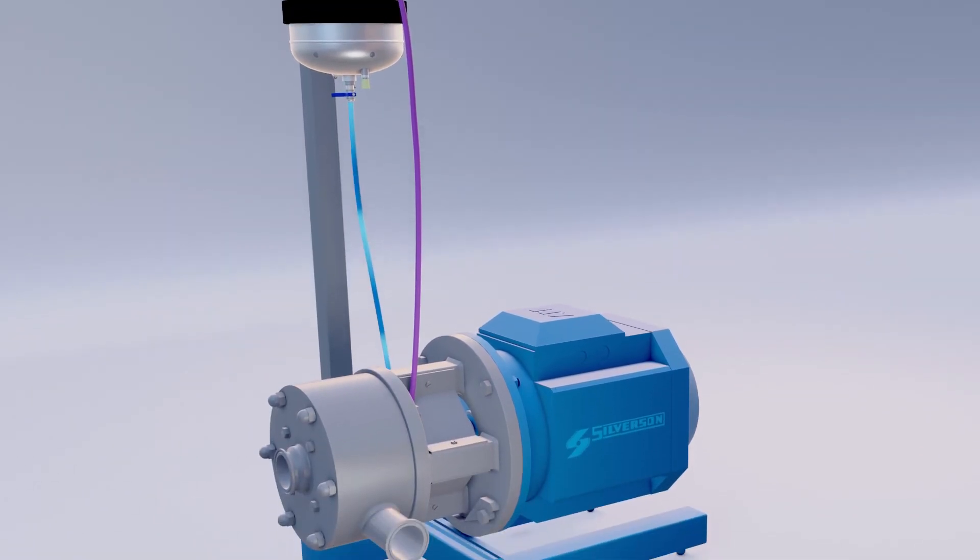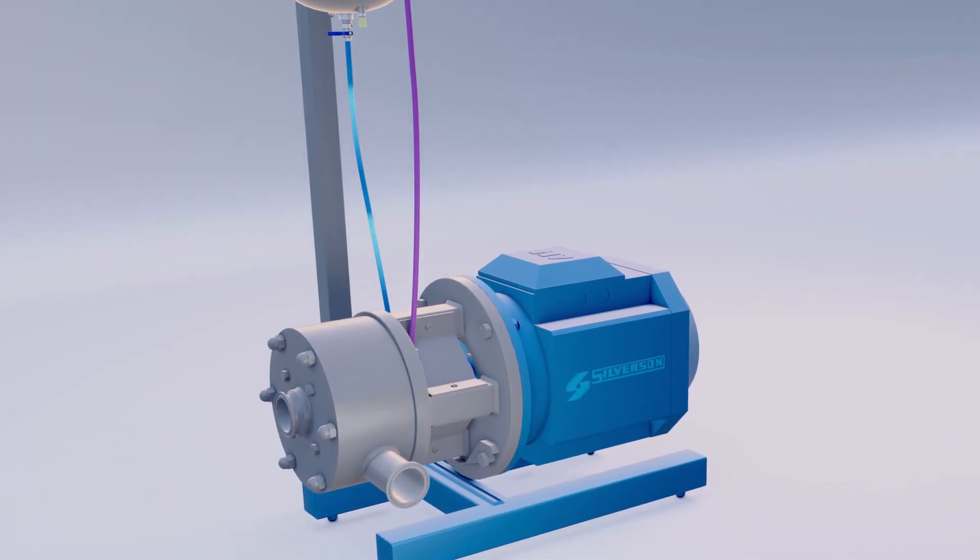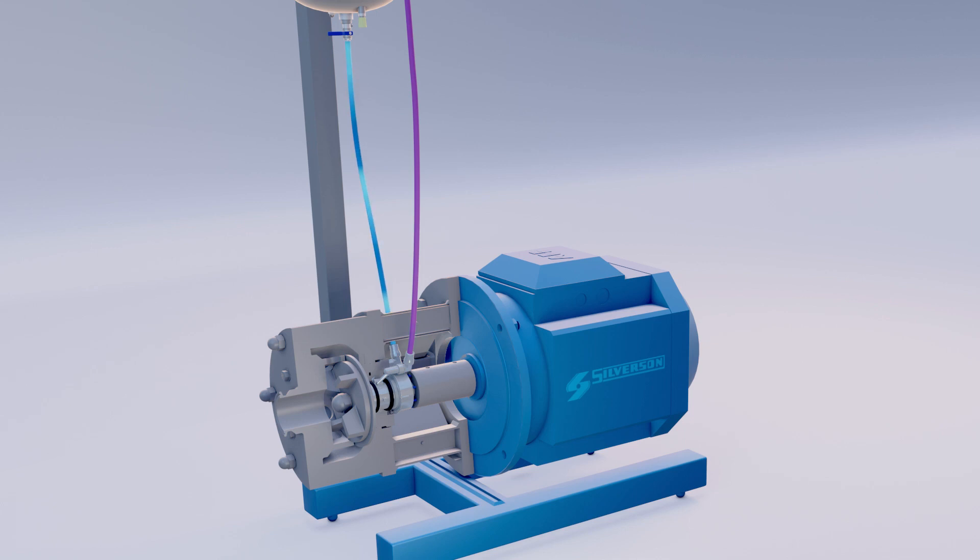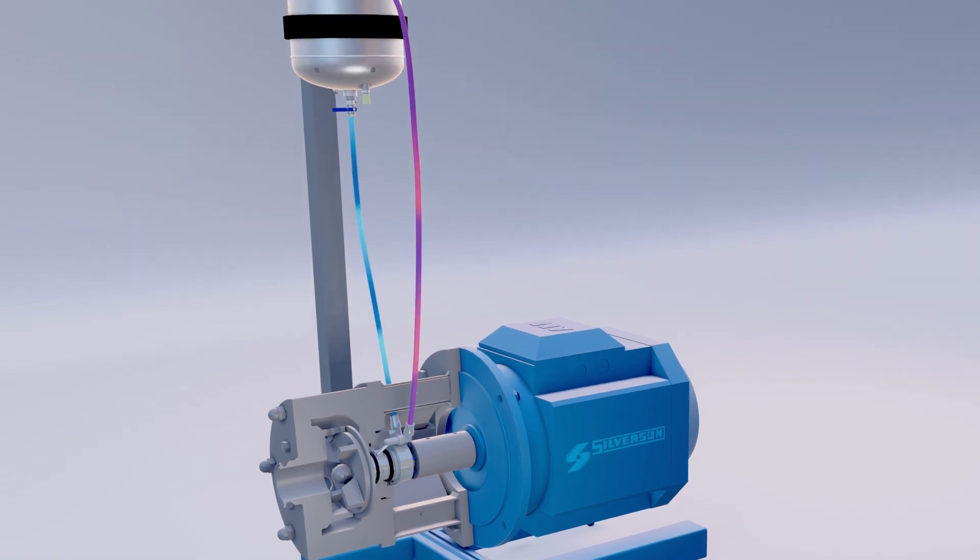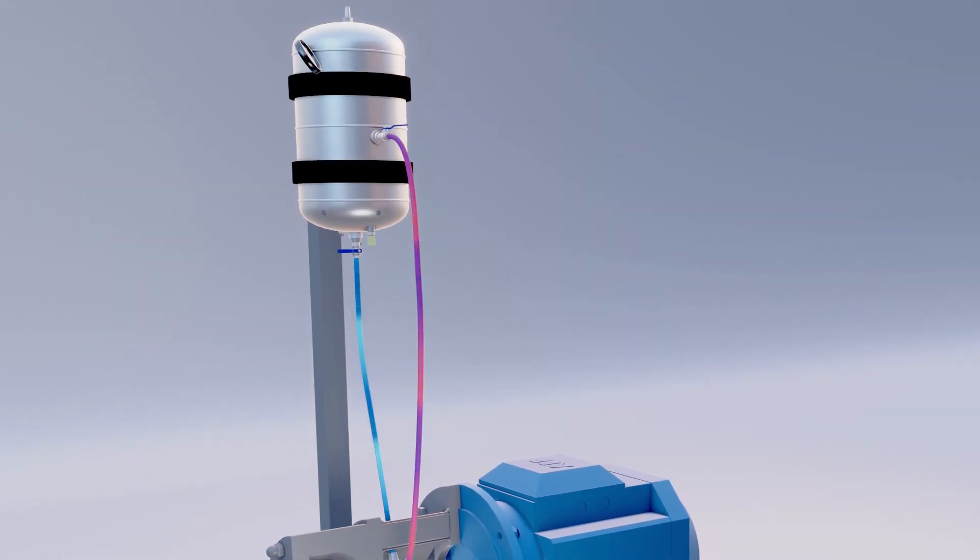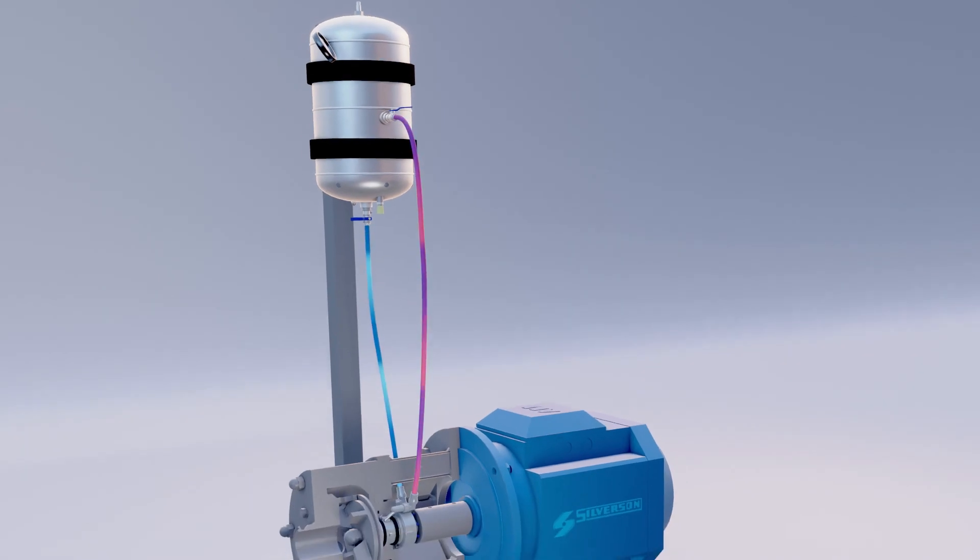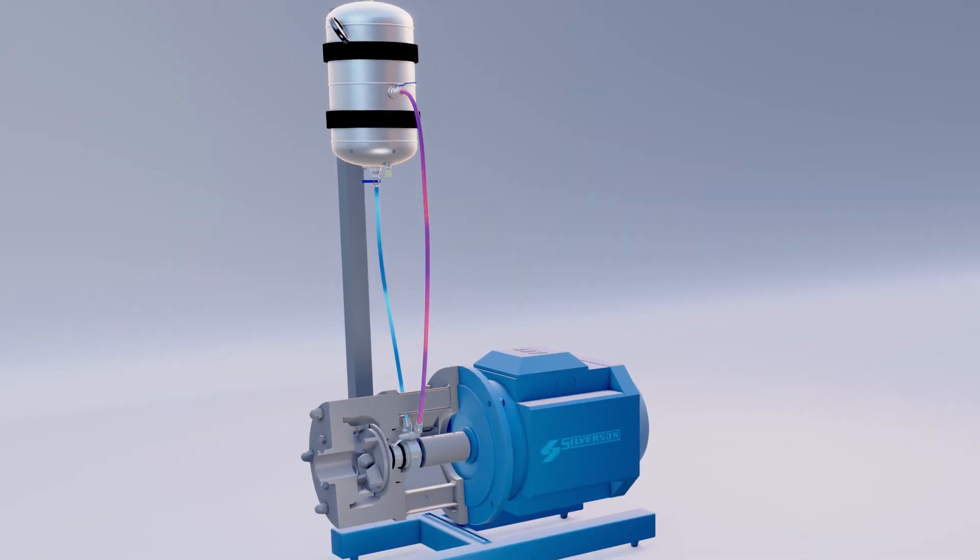As it heats up due to friction, it then rises upwards from the seal outlet back to the sealant chamber. This displaces the cooler fluid in the chamber which then flows down to the mixer, continuing the circulation of fluid through the system.